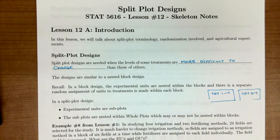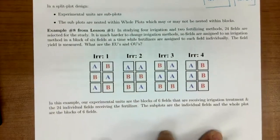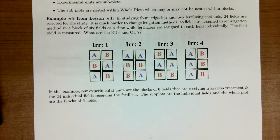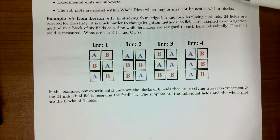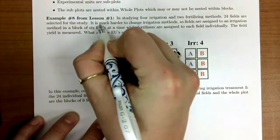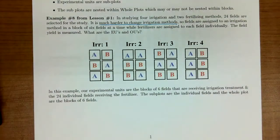Let's get an example that we've seen before. In lesson one, we had this example which I believe was called number eight, and I was trying to foreshadow the split plot. So let's use this example that we've already seen to connect what I was talking about. The example says, in studying four irrigation and two fertilizing methods, 24 fields are selected for the study. It's much harder to change the irrigation method, so fields are assigned to an irrigation method in a block of six fields at a time, while the fertilizers are assigned to each field individually. The field yield is measured.